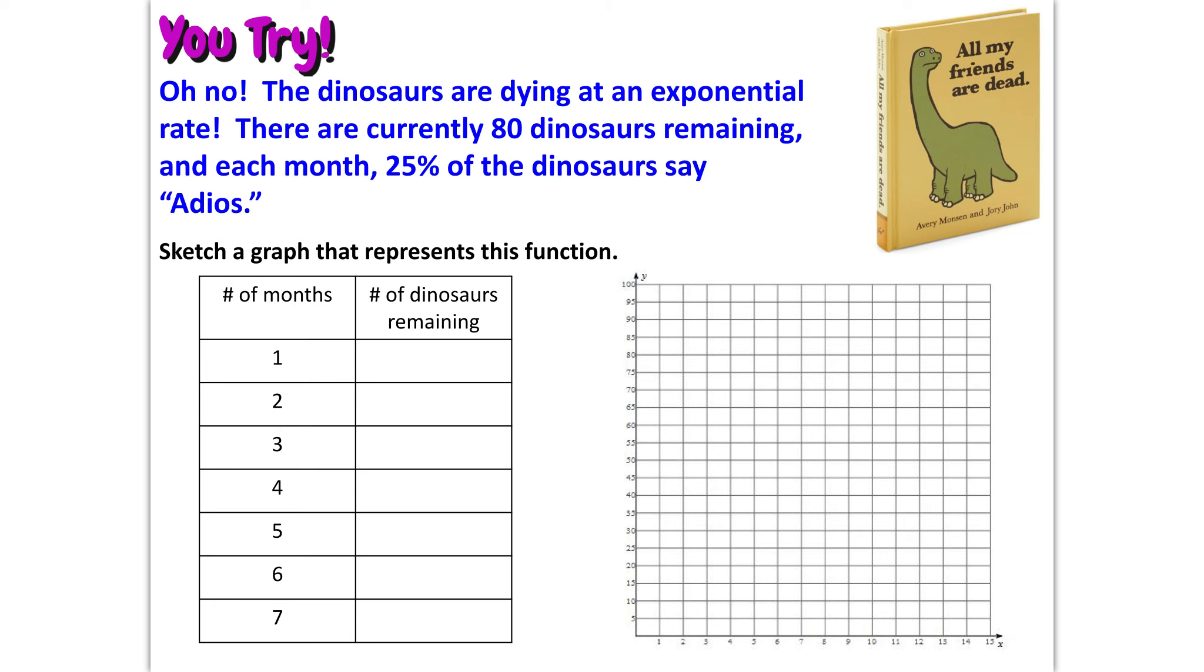Oh no, the dinosaurs are dying at an exponential rate. There are currently 80 dinosaurs remaining. And each month, 25% say adios. Number of months remaining. I want you to try and fill in this table. After one month, it's going to be 80 because that's our initial amount. Then after two months, here are the solutions to this problem.